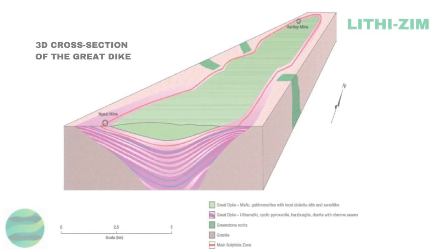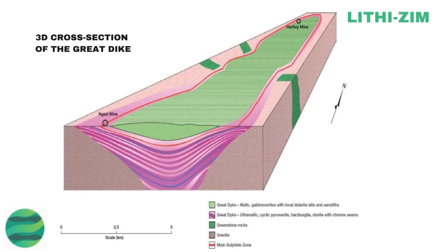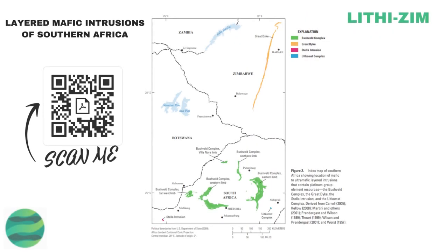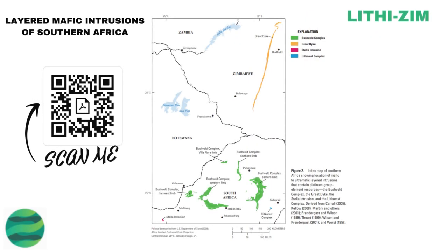Geologically, the Great Dyke is not a dyke but is lopololithic and eye-shaped in cross-section. It is a group of layered ultramafic intrusions that extend across Zimbabwe with a strike of about N20E. The width of the intrusions varies from 3 to 12 kilometers. The Great Dyke is unusual in that most ultramafic layered intrusions display near horizontal sill or sheet forms.